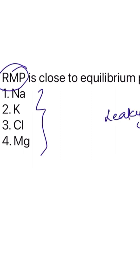These potassium channels are actually open at rest, and that is why the permeability of the membrane to potassium is high. This is the reason that RMP is close to the equilibrium potential of potassium.